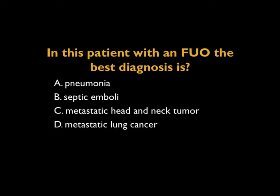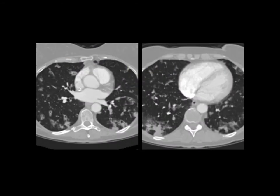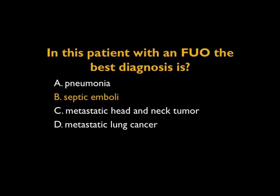This is an interesting case. Looking at the images you see a number of infiltrates, several are cavitary, and many are pleural-based and wedge-shaped. Pneumonia gives infiltrates, but the cavities and peripheral wedge-shaped aspects make me shy away from pneumonia. Head and neck tumors or metastatic lung cancer can give cavitary metastases, but those are usually not wedge-shaped at the periphery. When you have cavities and the wedge-shaped appearance and look at the total picture, septic emboli is your best answer.